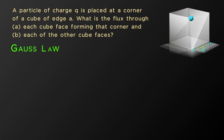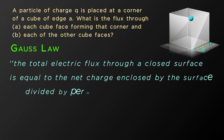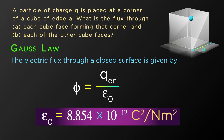Gauss's law for electrostatics is the simplest method to find the electric field at any point near a charge distribution. It states that the total electric flux through a closed surface equals the net charge enclosed by the surface divided by the permittivity of the medium. For a vacuum, Φ = Q_enclosed / ε₀, where ε₀ is 8.854 × 10⁻¹² C² per N·m².